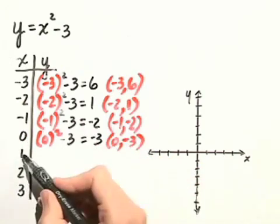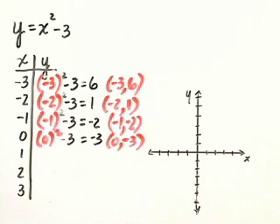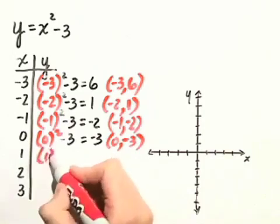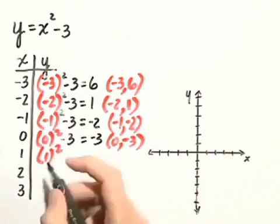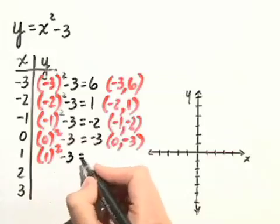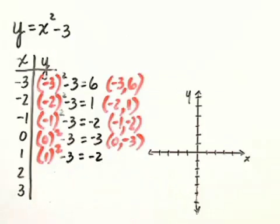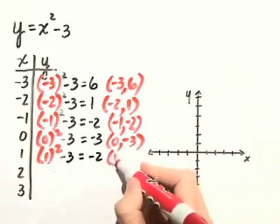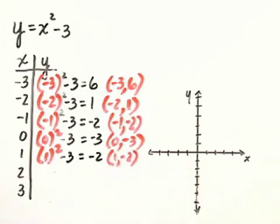Now we get to our positive integers. Let's substitute 1 in for x, and we have 1 squared minus 3, which just gives us negative 2. So that point will be 1, negative 2.